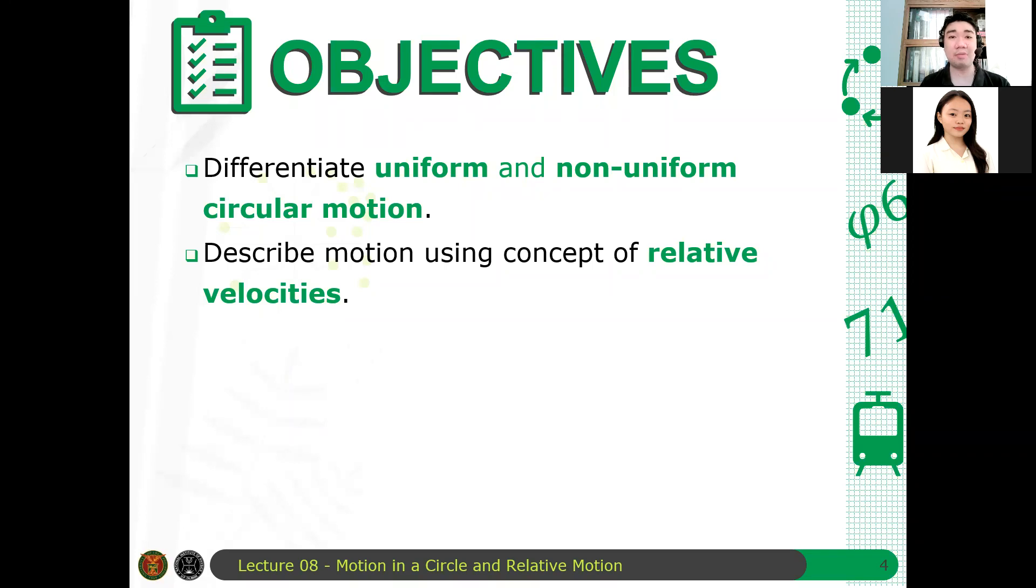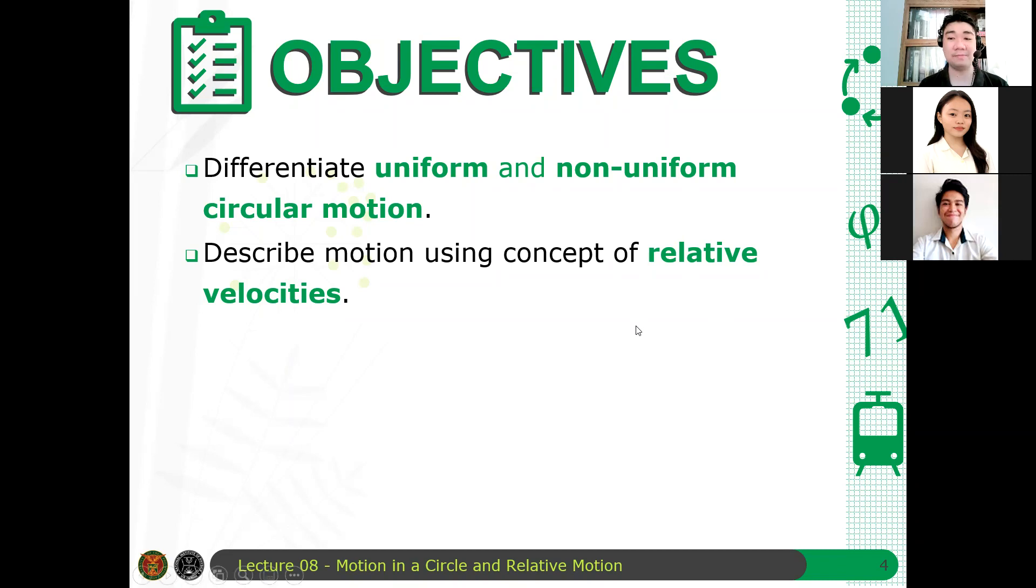So different observers will mean different measurements of velocities. So medyo nakakalito siya minsan, pero meron tayong madaling equation para hindi kayo malito dun sa bakit naging ganun yung mga equations na iyon. Are there any questions so far? May mga tanong? None. Okay, sige. And then also we solve problems involving circular motion.